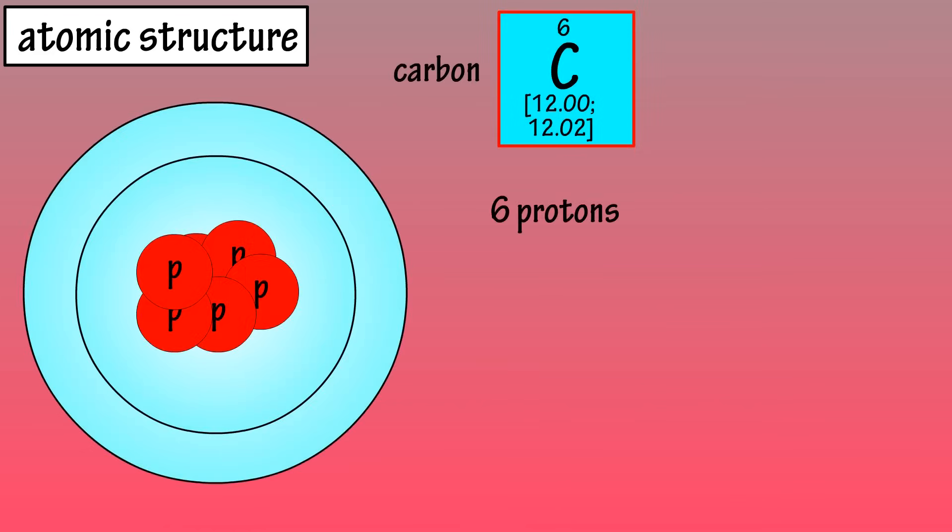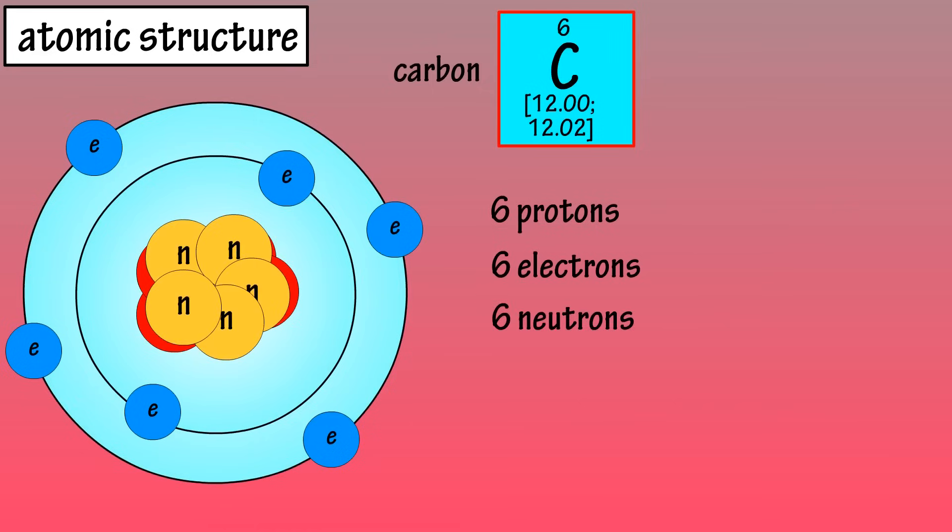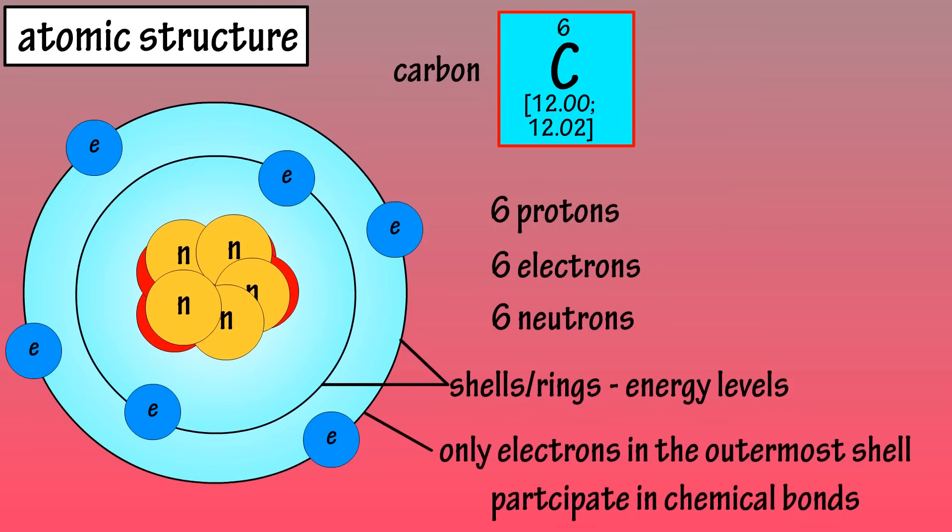If we look at a model of the element carbon, which has 6 protons, 6 electrons, and in most cases 6 neutrons, we can see the electrons in simple rings or shells surrounding the nucleus. Each shell represents a different energy level and can only hold a certain maximum number of electrons. In chemical reactions between atoms, only the electrons in the outermost shell participate in the resulting chemical bond.